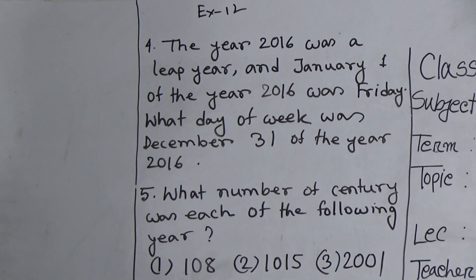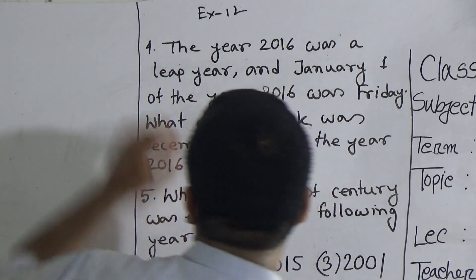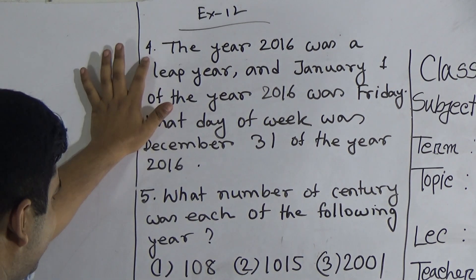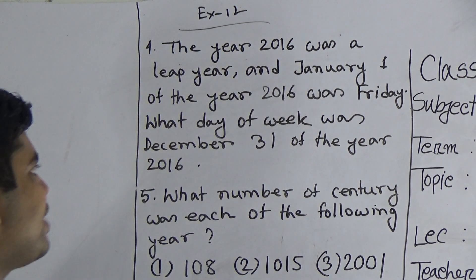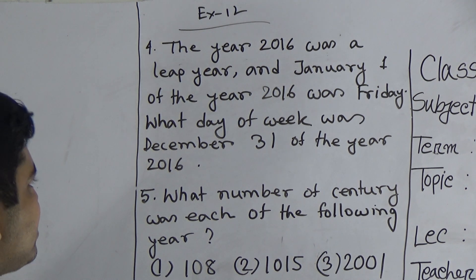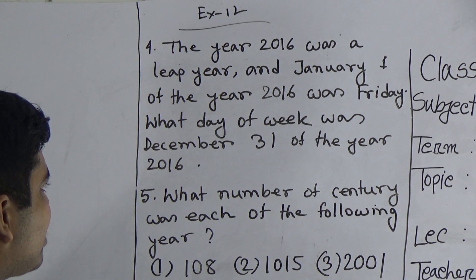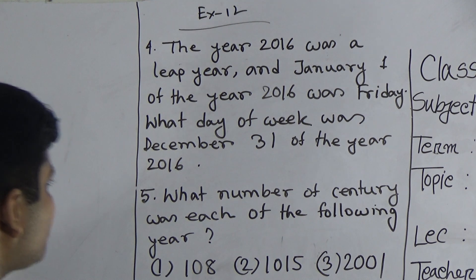I have already written question numbers 4, 5, and 6 on the board. First of all, we read question number 4. Exercise 12, question 4: 'The year 2016 was a leap year and January 1 of the year 2016 was Friday. What day of the week was December 31 of the year 2016?'